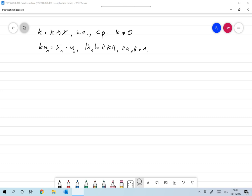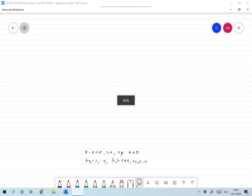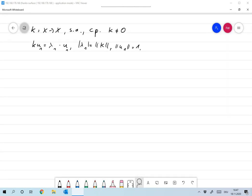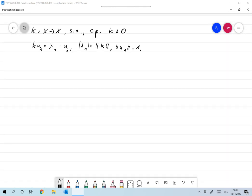Now define the operator k₁ applied to u as ku minus λ₁ times the scalar product of u and u₁ times u₁.